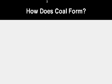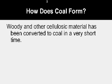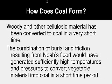Now let's talk about how coal forms. Wood, trees, and cellulosic material have been found to be converted into coal in a very short time. George Hill of the College of Mines and Mineral Industries at the University of Utah has produced coal in a very short time using proper temperature and pressures. It doesn't take thousands or millions of years to produce coal. Probably during Noah's flood, huge amounts of vegetation and trees were transported and buried to form the coal seams, and the resulting pressure of the sediment generated sufficiently high temperatures to convert this vegetable material into coal in a very short time period.